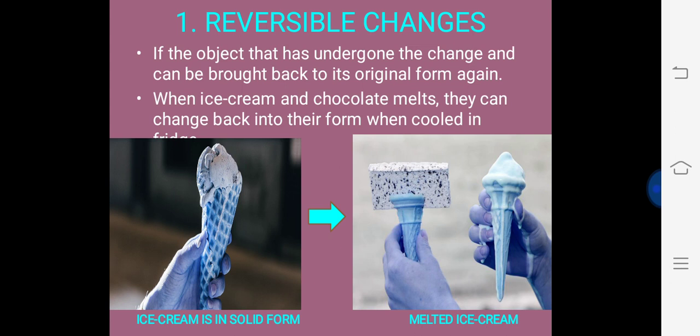Reversible changes: if the object that has undergone the change can be brought back to its original form again. For example, when ice cream and chocolate melt, they can change back into their original form when cooled in a fridge. As you can see, one hand has ice cream in solid form, and on the other hand, you can see melted ice cream.